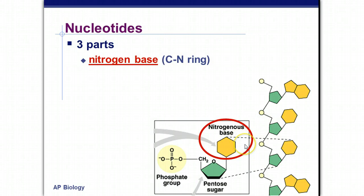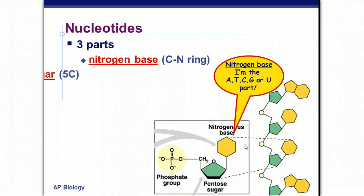So the nitrogen base is a base that is a carbon ring that contains nitrogen. And that's that A, T, C, G, or U if you're RNA part. In nucleotides, we have a pentose sugar, pent for five, like pentagram, right? Ose rhymes with gross, means it's a sugar. So it's a five carbon sugar.